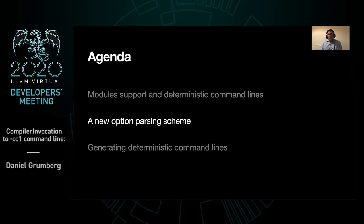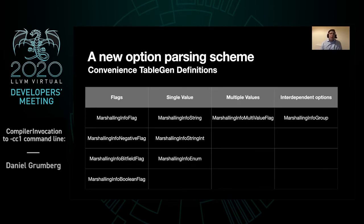But before we talk about that, let's talk about the changes that were necessary to CC1's option parser in order to enable this new use case. We added mix-ins to the tablegen definitions that can be attached to the option declarations. These specify how to parse the option and conversely how to generate a command line option for it. The major categories are displayed on the slide.